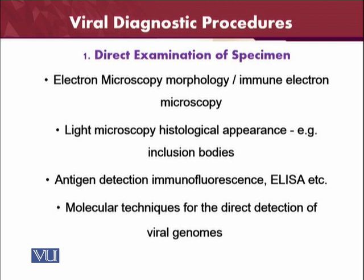Similarly, there are other microscopes such as the light microscope. When a cell is attacked by a virus, there is multiplication and replication of the virus inside, which causes special structures called inclusions or viral factories. On the basis of these inclusions visible under the light microscope, you can diagnose the virus. Antigen detection by immunofluorescence, such as ELISA, and molecular techniques for direct detection of viral genomes are also part of direct examination.